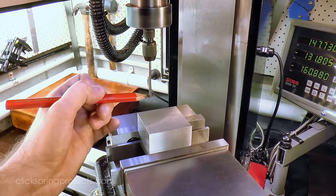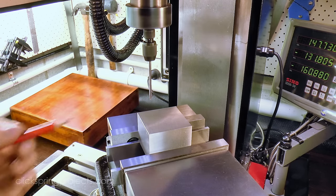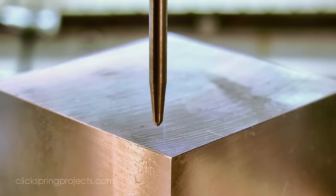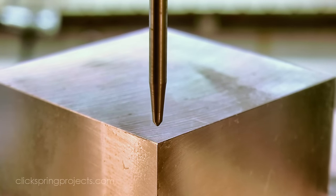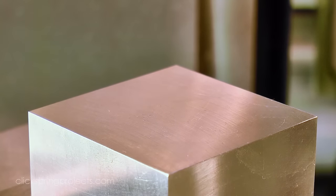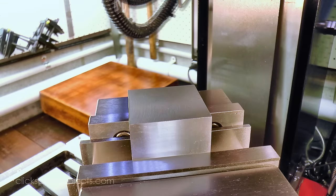Once the stock was in place, I used a wiggler to position the spindle over one of the corners. A quick check over at the other corner confirmed the alignment of the spindle, and then I made a start on removing the bulk of the waste stock.